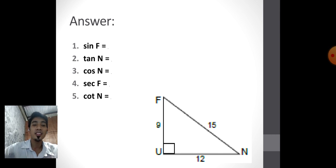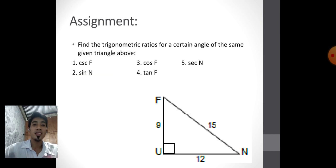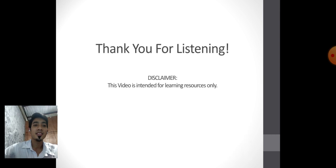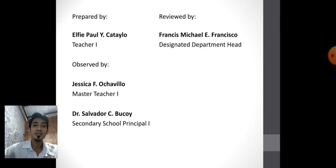Hope you get the pattern. For your assignment, find the trigonometric ratios for a certain angle of the same given triangle: cosecant F, sine N, cosine F, tangent F, and secant N. Once again, this is your teacher, Teacher Paul. Thank you for listening.